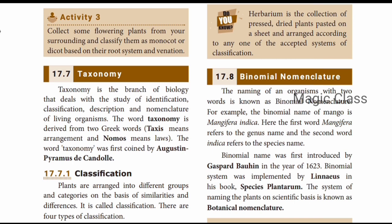The naming of an organism with two words is called binomial nomenclature. For example, the binomial name of mango is Mangifera indica. The binomial name system was introduced by Gaspard Bauhin in the year 1623. In the botanical naming system, the important work is Species Plantarum.